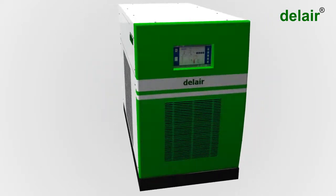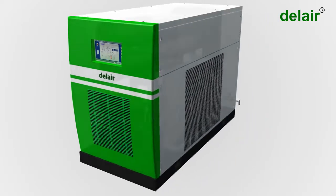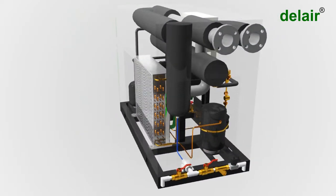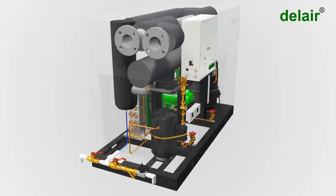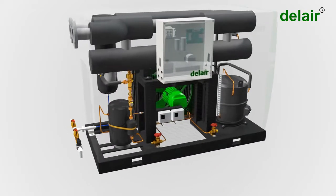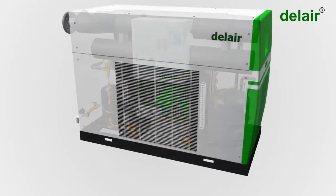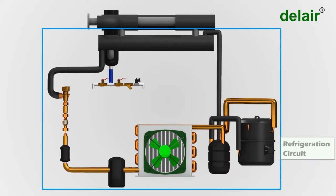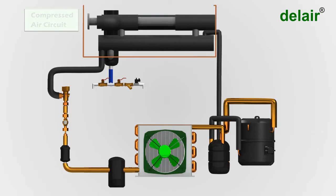Del Air Refrigeration Type Dryer operates on the method of cooling the air to near freezing point to remove the moisture. The refrigeration dryer consists of two circuits: refrigeration circuit and compressed air circuit.